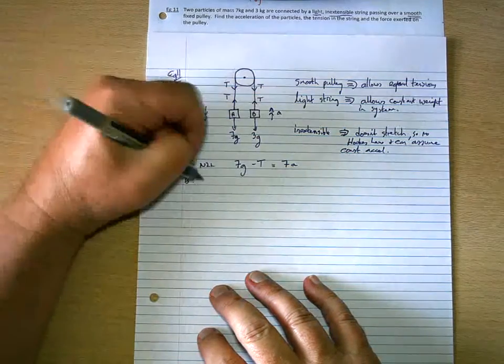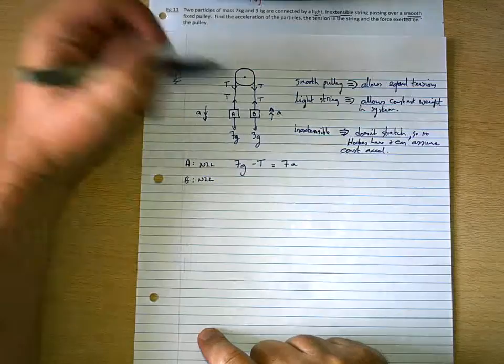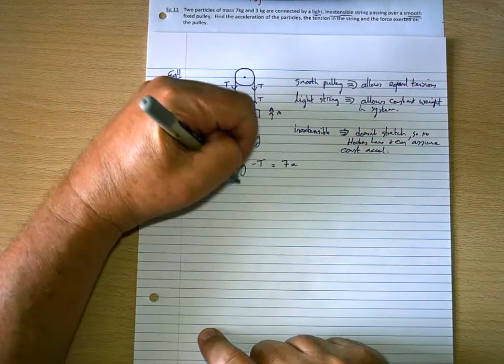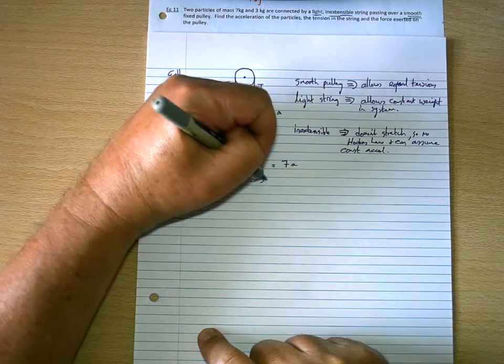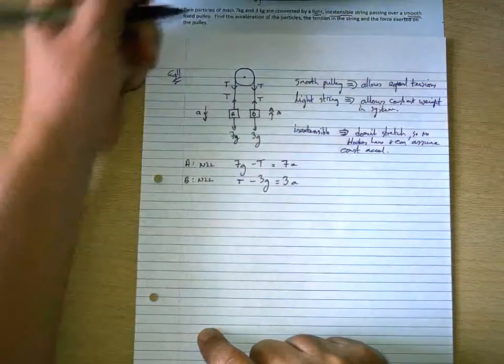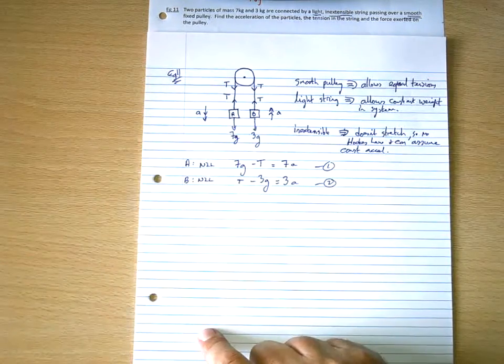Then, for B, also moving according to Newton's Second Law, this time, the direction of motion is up, so we have T minus 3g equals 3a. That's equation 1. That's equation 2.